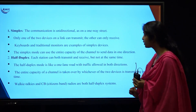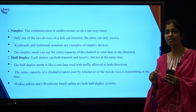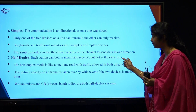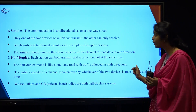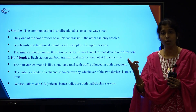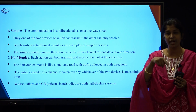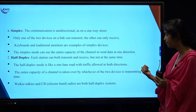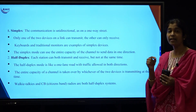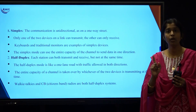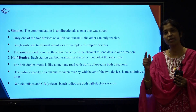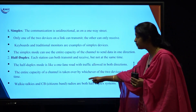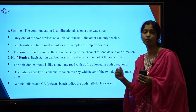In half duplex transmission, each station can both transmit and receive but not at the same time. It is just like a one-lane road where traffic comes in one direction and also the other direction, but not simultaneously. The entire capacity of the channel is shared by both devices but at different times. The best example of half duplex is walkie-talkie.